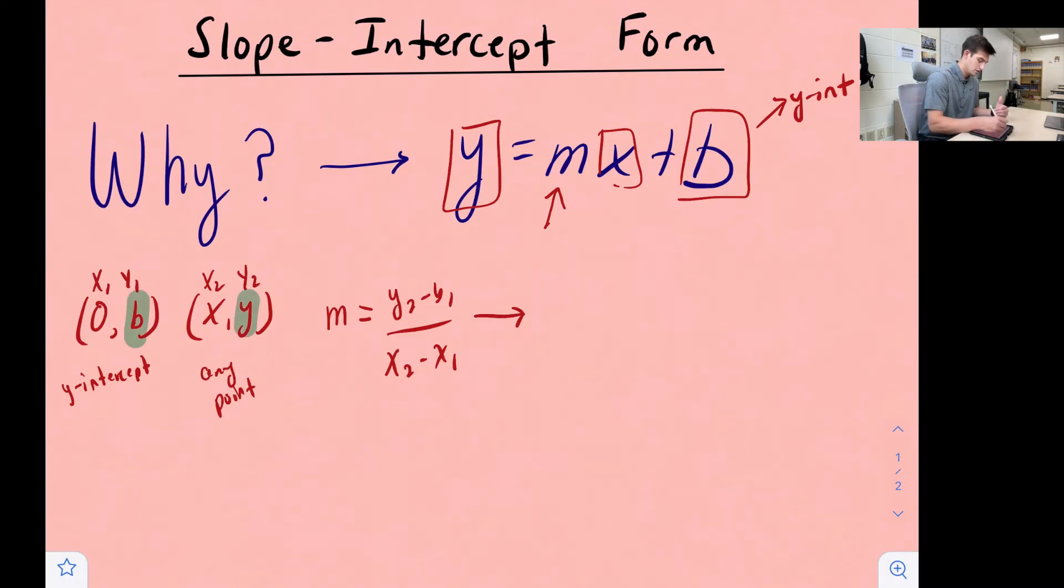So y sub two, y sub one. I'm going to say m equals y minus b divided by x minus zero. Now we can just simplify here and we can say m is equal to y minus b over x, since x minus zero would just be x.